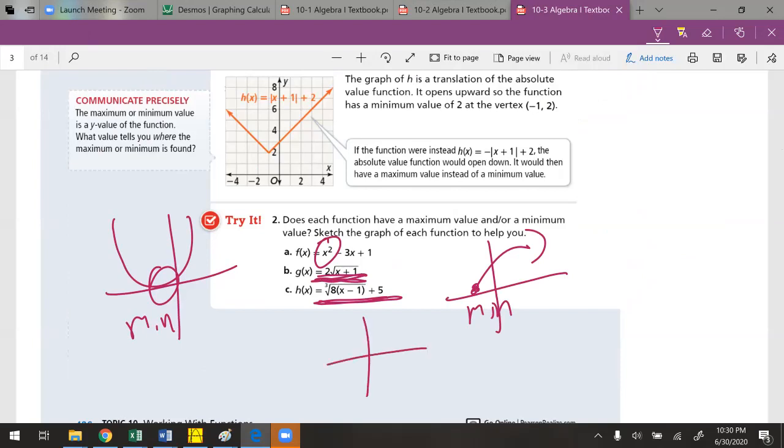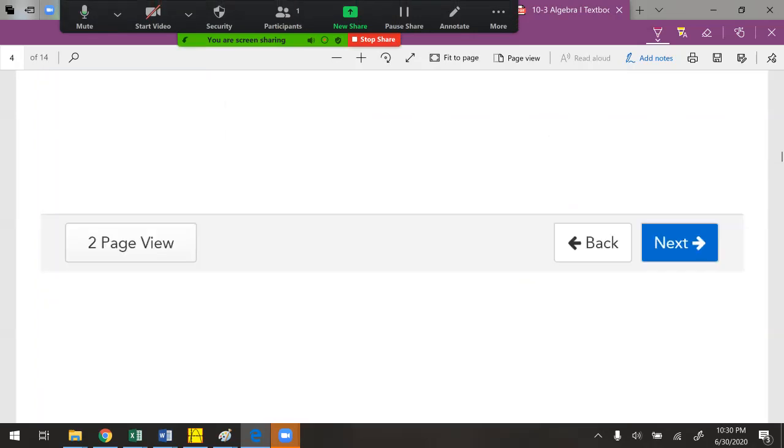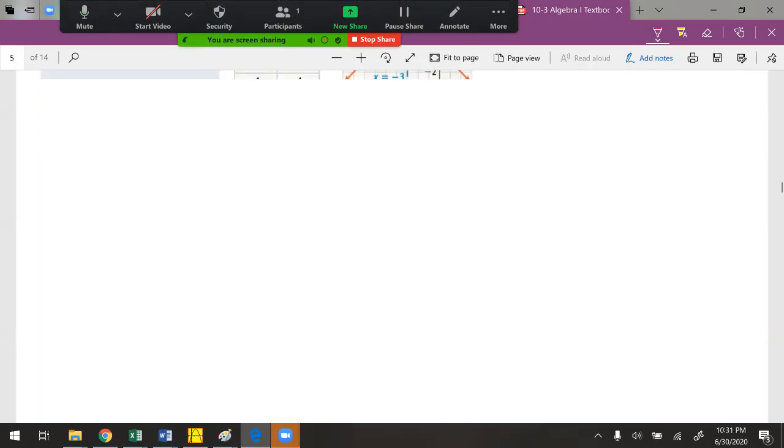This right here is cubic and it goes both ways. None. There will be none because it continues forever to the left and then forever to the right.